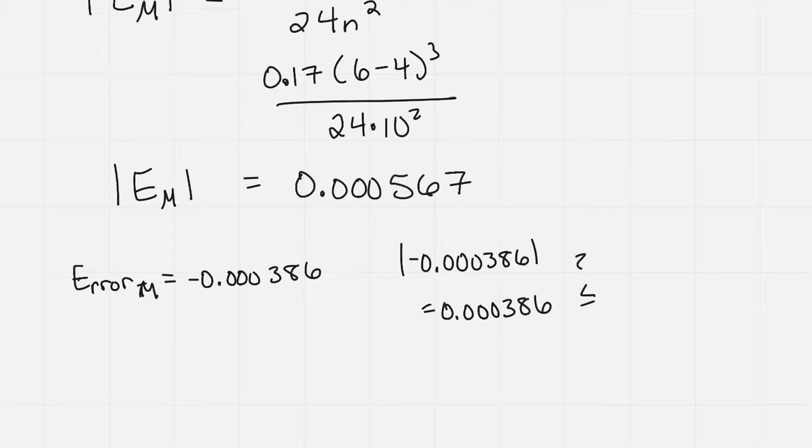And my question is, did it fall within the bounds like it says it's going to? And it does. That is less than or equal to 0.000567. So it fell within the bounds. So again, the bound did not calculate the exact error. It gave me a region.